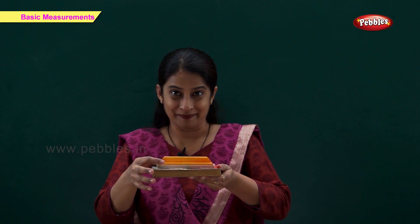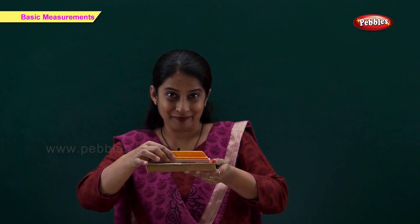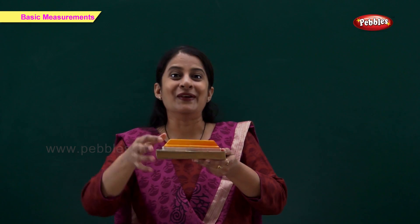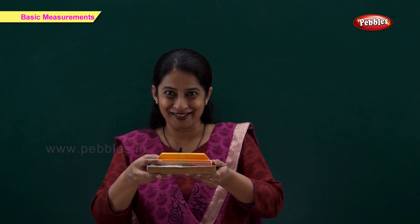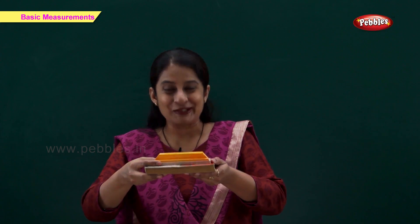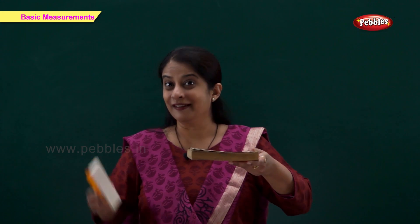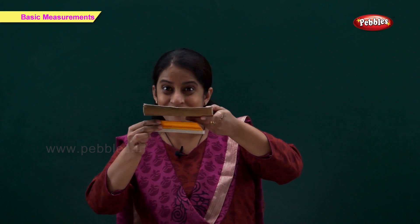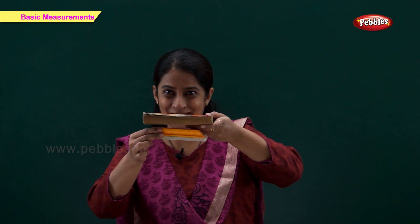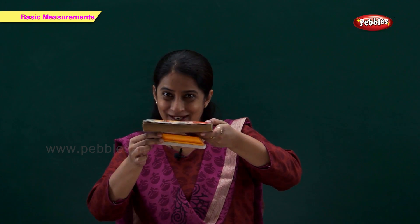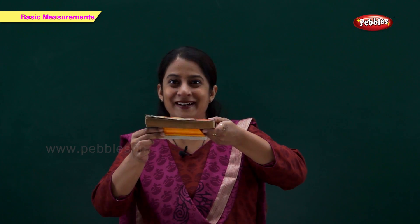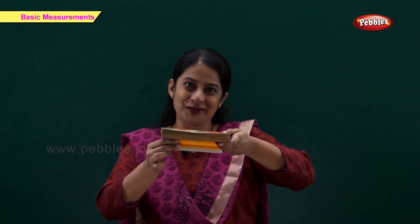Now tell me — see again, book and duster. Tell me fast — the duster is over the book. Okay, book and duster again. Now see — the duster is... come on, tell me! The duster is under the book.